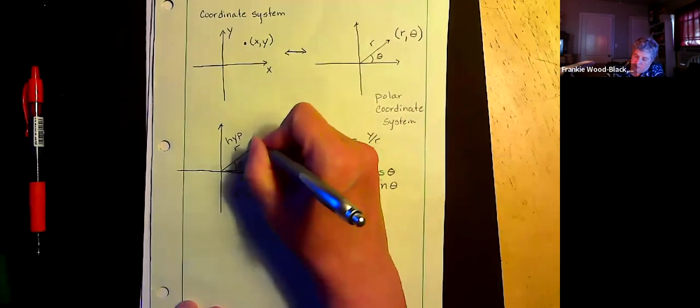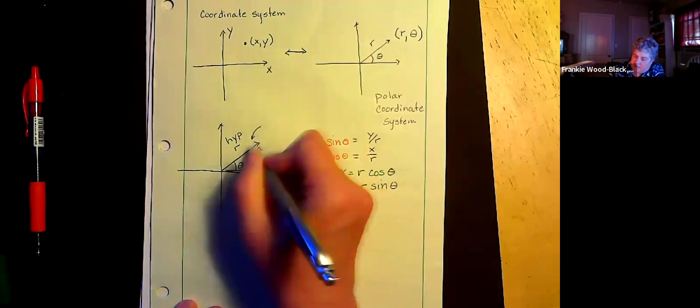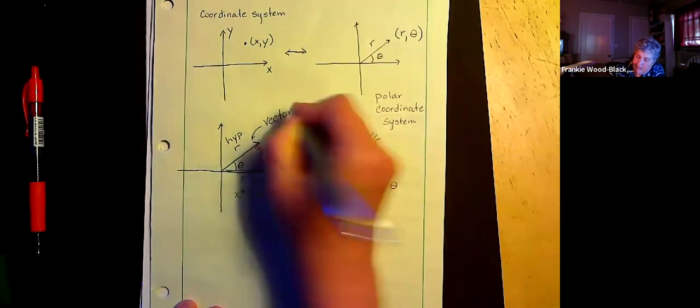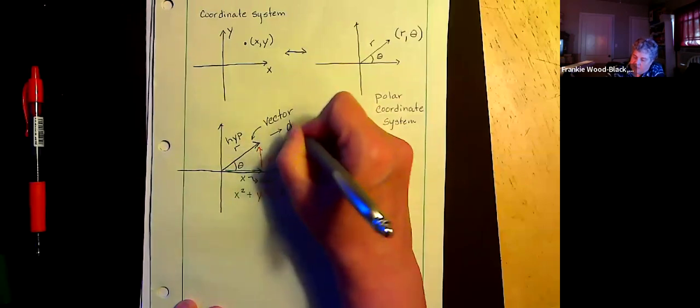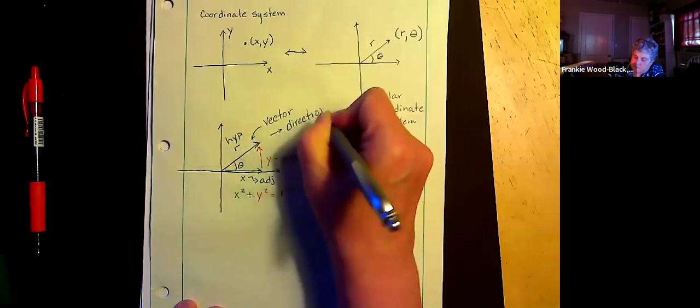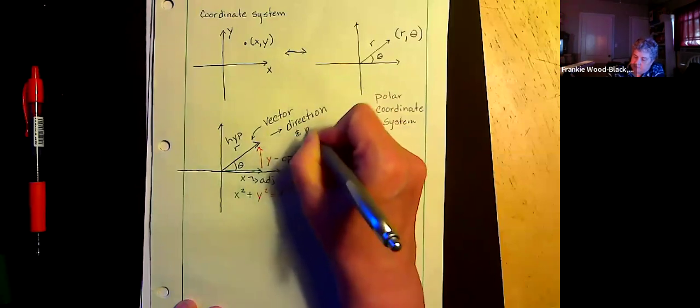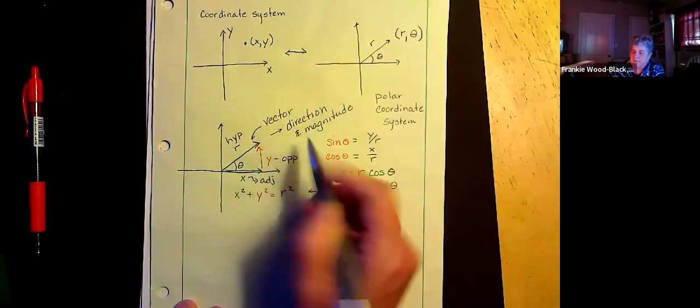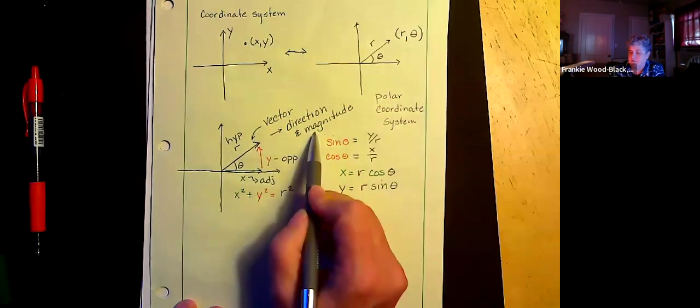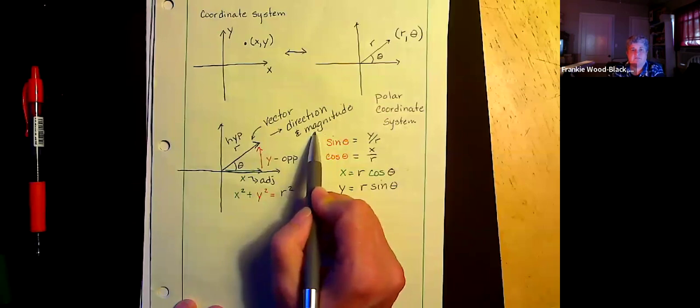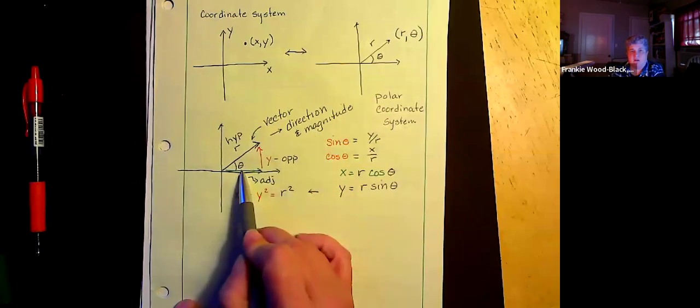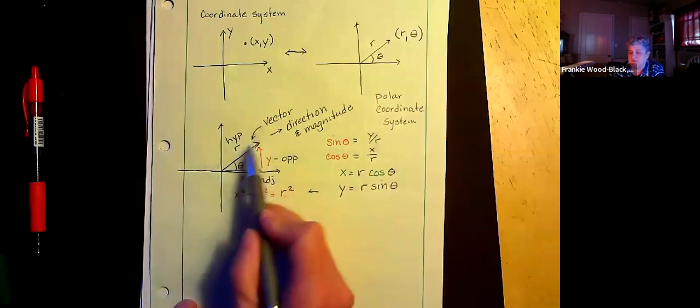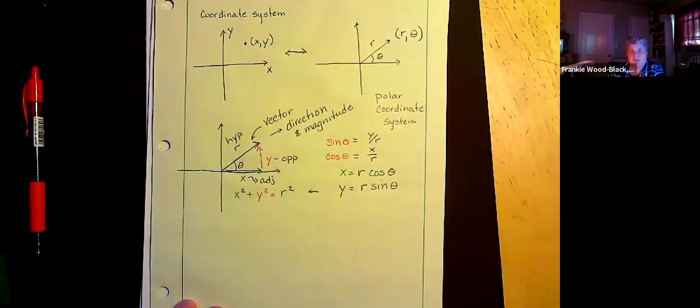Because what we're going to do is we're going to call this thing something that some people have never called before. We're going to call this a vector. And vectors have direction and magnitude. This tells us the way it points. This tells us how long it is. So my direction is going to come from this angle. My magnitude tells me how long it is. So this is a vector and we're going to start looking at vectors.